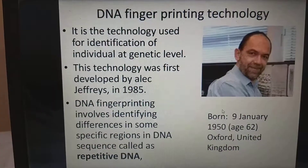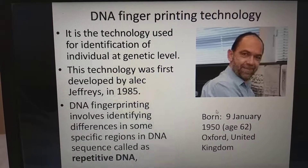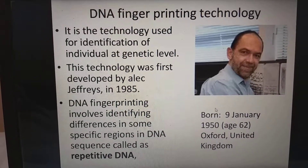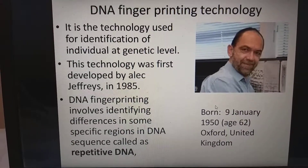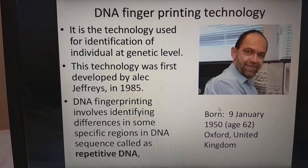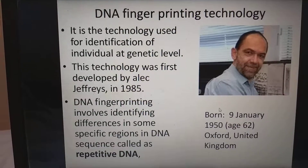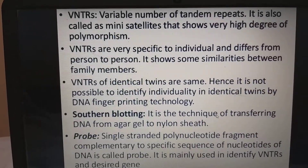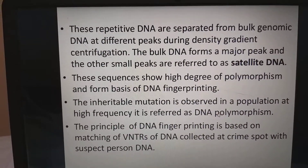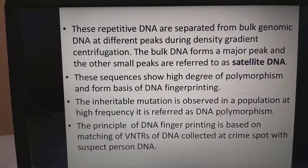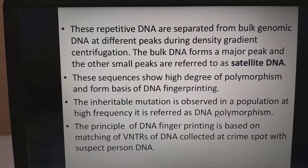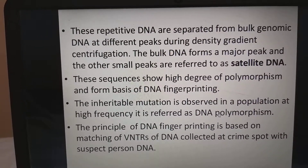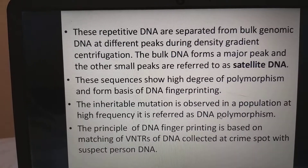DNA fingerprinting technology is used for the identification of individuals at the genetic level. This technology was first developed by Alec Jeffries in 1985. DNA fingerprinting involves identifying differences in some specific regions of DNA sequences called repetitive DNA. These repetitive DNAs are separated from bulk genomic DNA at different peaks during density gradient centrifugation. The bulk DNA forms a major peak, and the other smaller peaks are referred to as satellite DNA. These sequences show a high degree of polymorphism to form the basis of DNA fingerprinting. An inheritable mutation observed in a population at a high frequency is referred to as DNA polymorphism.